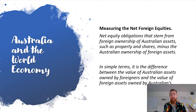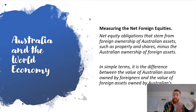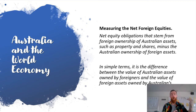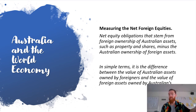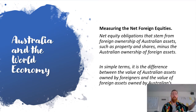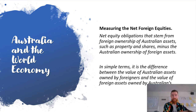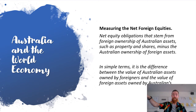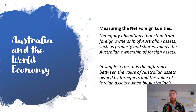Then we have net foreign equities, which is all about assets rather than debt — assets being something that pertains to wealth. It covers things owned by Australians overseas against what overseas people own in Australia. Net equity obligations stem from foreign ownership of Australian assets such as property and shares, minus the Australian ownership of foreign assets. In simple terms, it's the difference between the value of Australian assets owned by foreigners and the value of foreign assets owned by Australians.